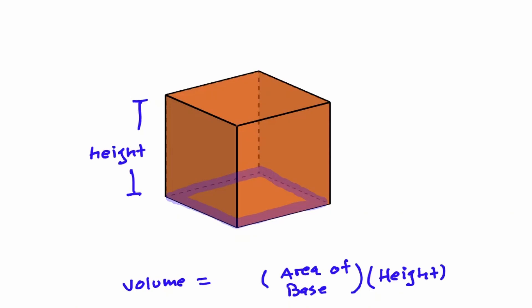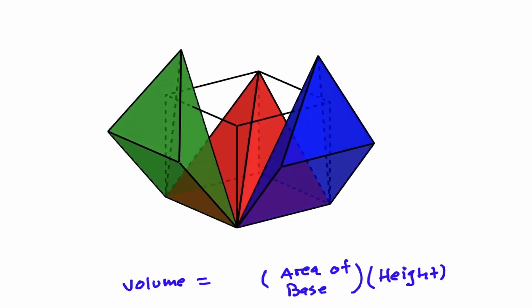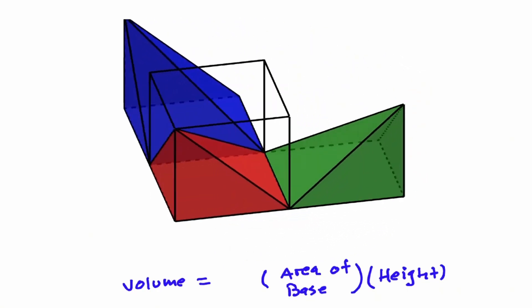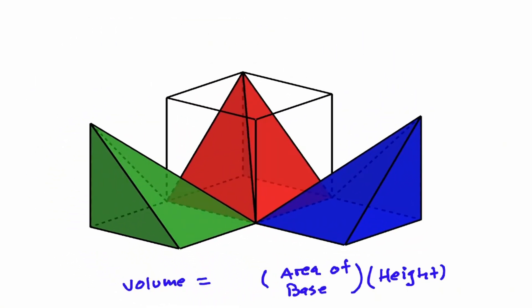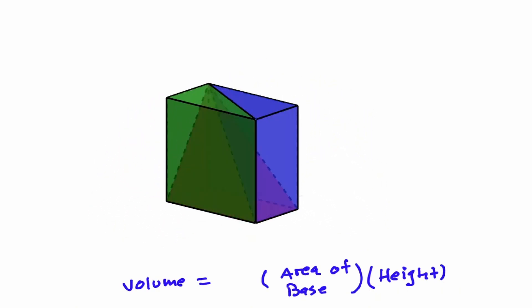Now let's break this cube into pyramids. Let's open these pyramids and see how many pyramids we can fit into this cube. Notice that we're able to fit three pyramids inside this cube. And even if we change the dimensions of this cube, the pyramids will follow those dimensions and we're still going to be able to fit three pyramids inside this prism.